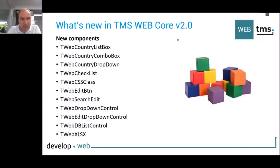A major part of the new WebCore version 2.0 is the many controls that have been added. Here is a list of new components: the country list box, combo box, and drop-down; the checklist control; CSS class component; edit control with attached button; a drop-down control; an editable drop-down control; a DB-aware list control; and we also significantly enhanced the XLSX import/export component and integrated it directly into WebCore 2.0.